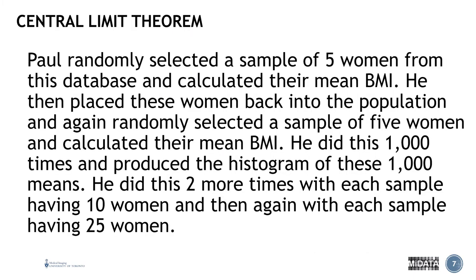So Paul decides to randomly select a sample of five women from this data set and calculate their mean BMI. He then places these women back into the population and again randomly selects a sample of five women and calculates their mean BMI. He repeats this a thousand times and produces a histogram of these a thousand means.